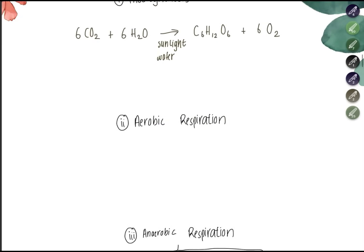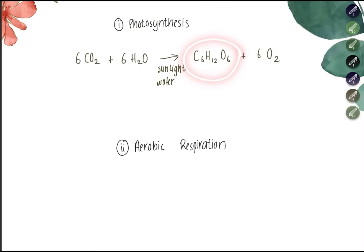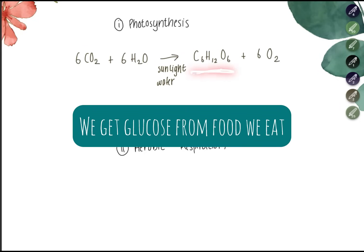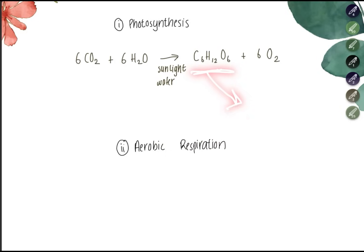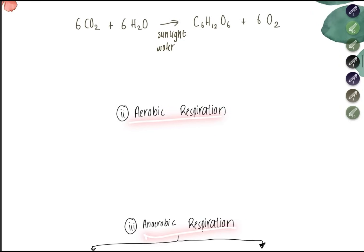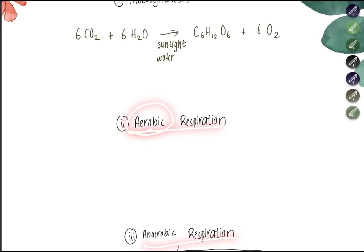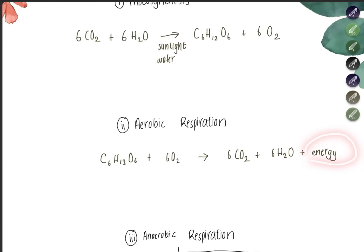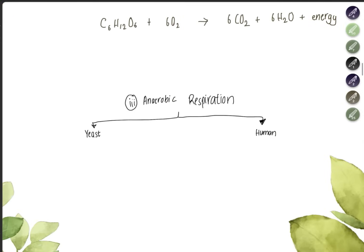Aerobic respiration is how glucose — whether in plants, humans, or animals — is used to produce energy. It always occurs in the presence of oxygen. The equation is: C₆H₁₂O₆ + O₂ → 6CO₂ + 6H₂O + energy. This energy is used to carry out day-to-day activities.